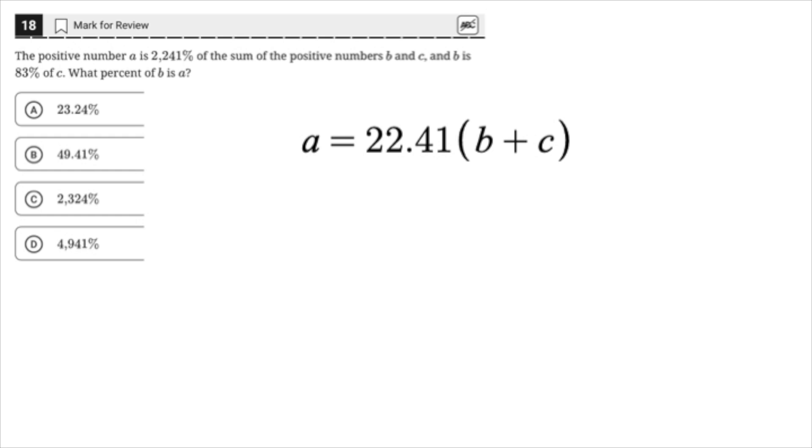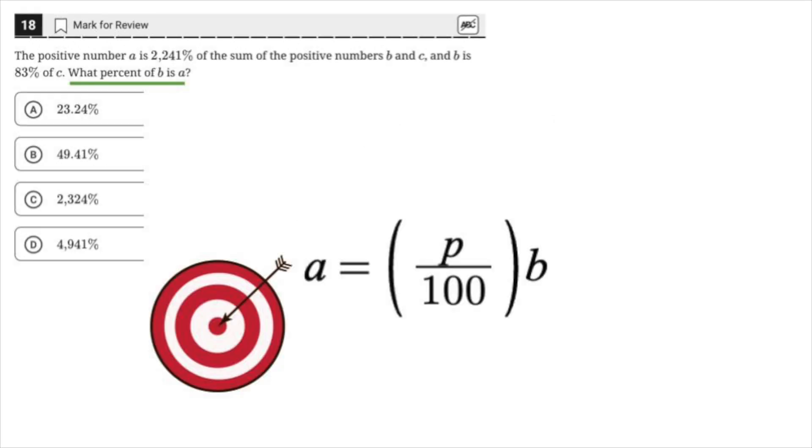The positive number A is 2,241% of the sum of the positive numbers B and C, and B is 83% of C. Notice that the question asks what percent of B is A, therefore we're trying to eliminate the variable C.